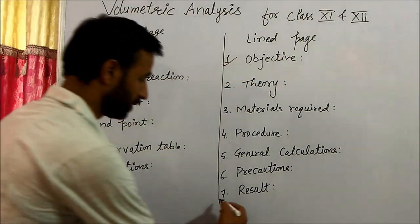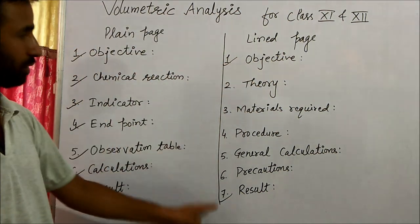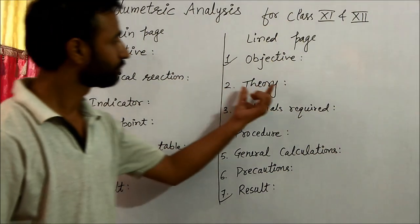On the lined page, first you write objective. Objective comes on both sides of the paper, as well as the result. They are on both sides of the paper. Then theory.